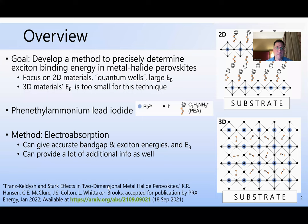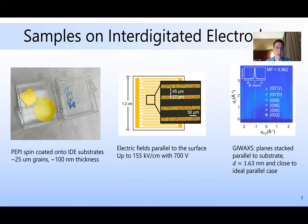The samples are grown on interdigitated electrodes. Spin coating forms polycrystalline material. We use approximately 100 nanometers of thickness, and the interdigitated electrodes provide electric fields parallel to the plane of the surface, and that's also the direction that the octahedral planes stack.